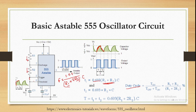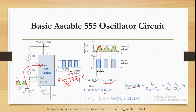The capacitor charges with R1 and R2, while during T2 the capacitor discharges through R2 only — from pin 7 towards pin 1 through the internal transistor. The total period T equals T1 plus T2, giving 0.693 × (R1 + 2·R2) × C, and frequency f equals 1.44 divided by (R1 + 2·R2) × C. The duty cycle is (R1 + R2) divided by (R1 + 2·R2).